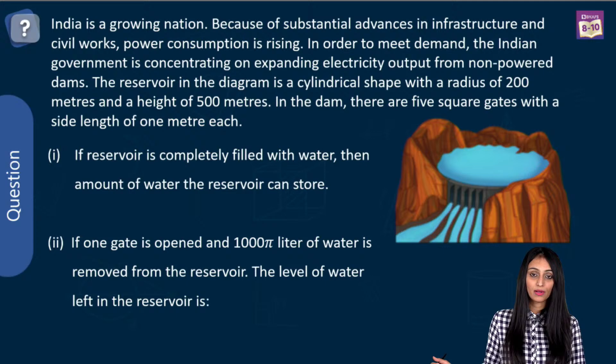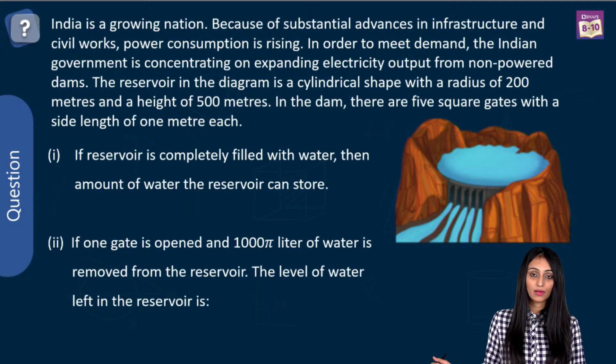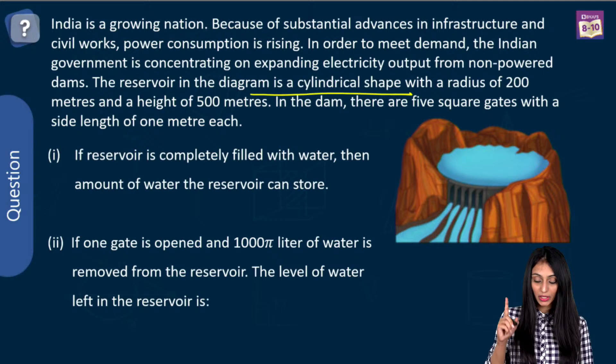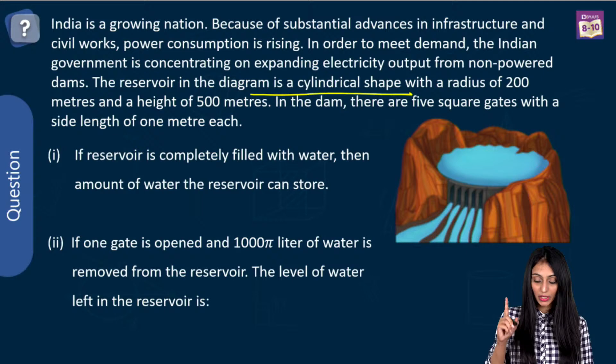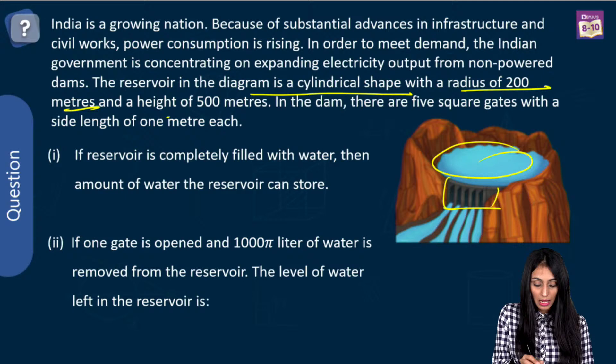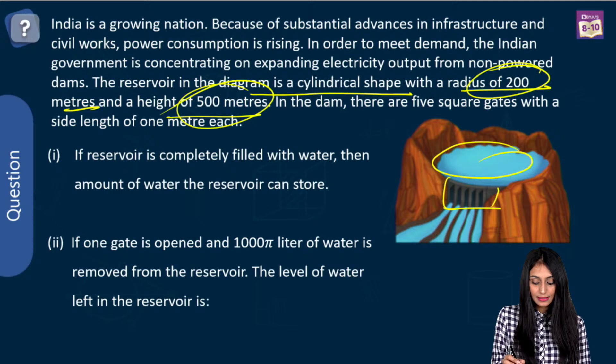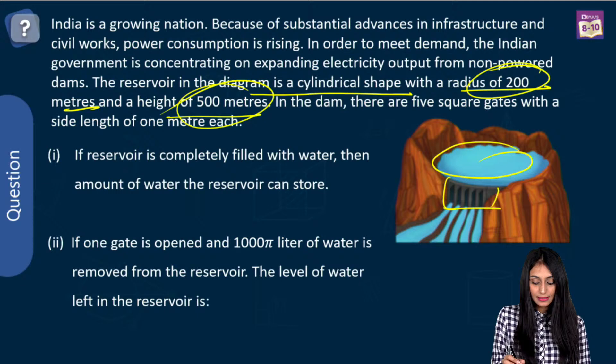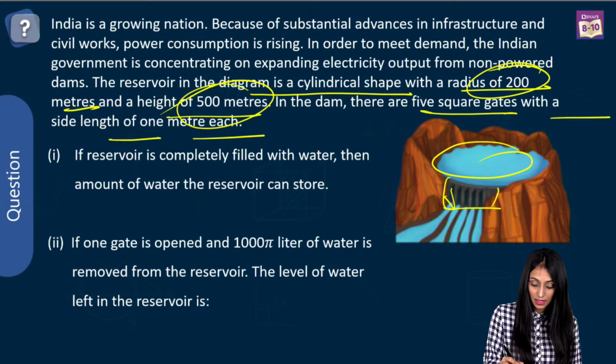Next question: India is a growing nation and power consumption is rising. The Indian government is expanding electricity output from non-power dams. The reservoir shown in the diagram is cylindrical in shape with a radius of 200 meters and height of 500 meters. In the dam there are five square gates, each with a side length of one meter.